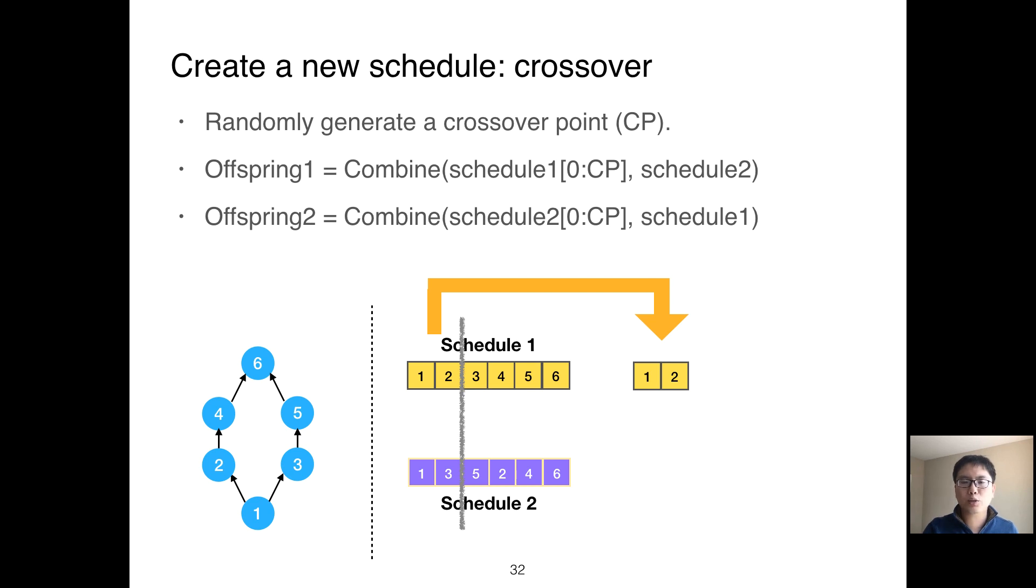We then use schedule two to complete offspring one. We iterate the operators in schedule two. If the operator is not in offspring one, we append the operator to offspring one. Finally, we can get a valid schedule which has partial order information from both parents. Offspring two can be created with the same approach but with different parts from the parents.